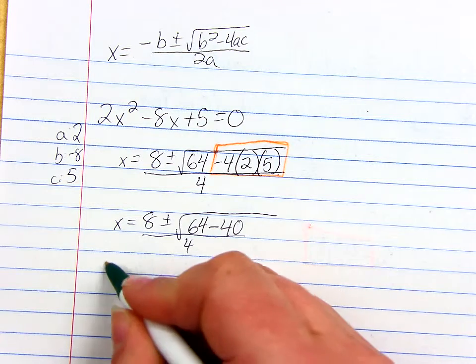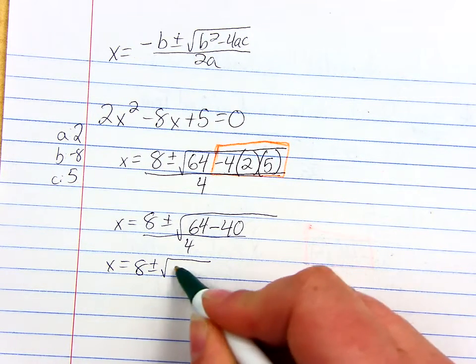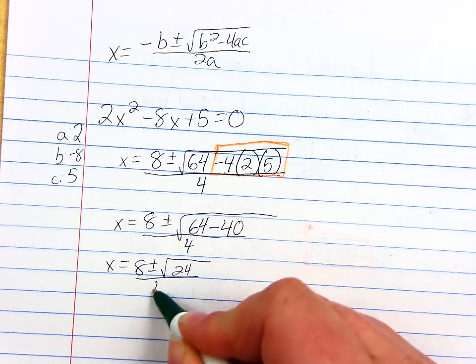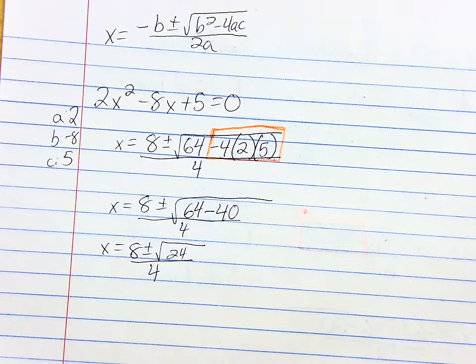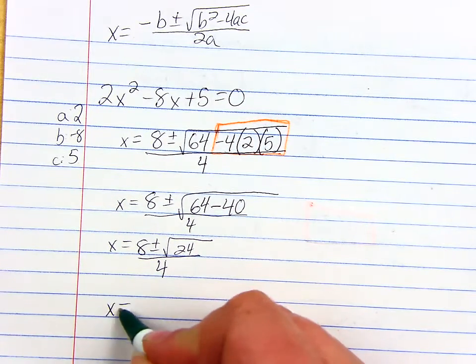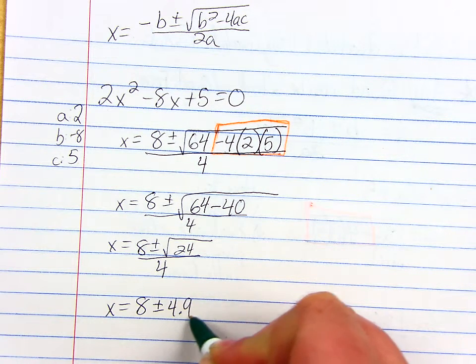So now let's just keep going. I've got 8 plus and minus the square root of 24 over 4. And now let's assume that this time we wanted to go into decimals. So we're just going to go ahead and take out our calculator and find out what the square root of 24 is. You're saying it'd be about 4? It is. If we round to the nearest tenth, we've got 4.9. So we'd have 8 plus and minus 4.9 over 4.